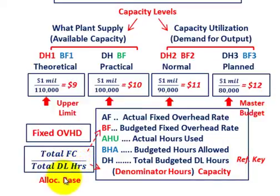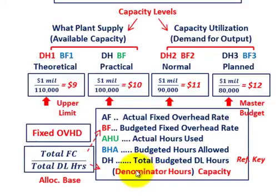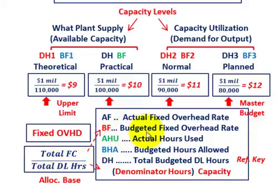What we're talking about with these denominator hours — the capacity we use for our denominator hours, in this case our allocation base of direct labor hours — it's called denominator hours because it's in the denominator of our equation to determine the fixed overhead rate that we're going to be applying to our products.